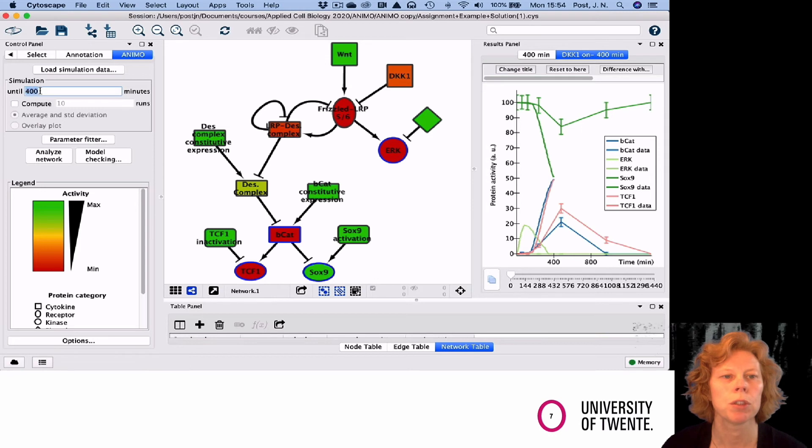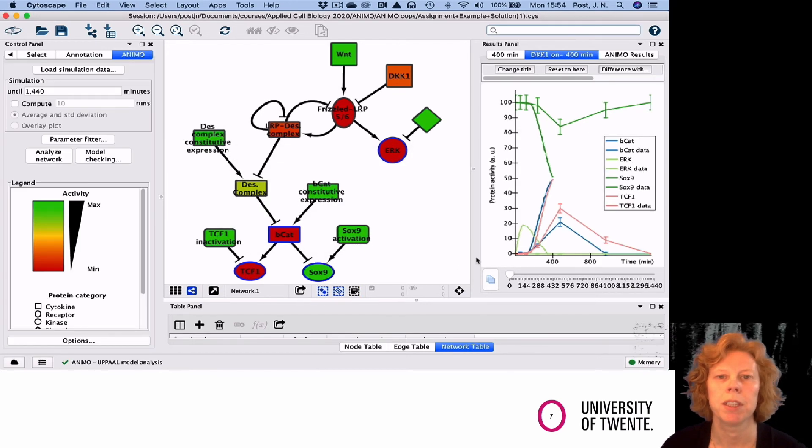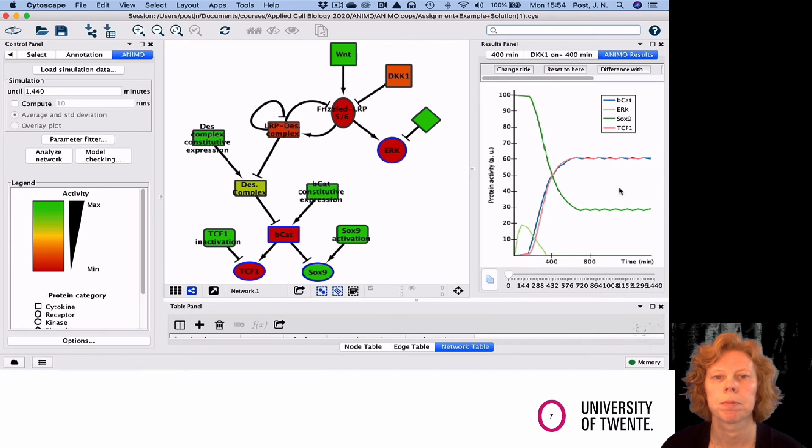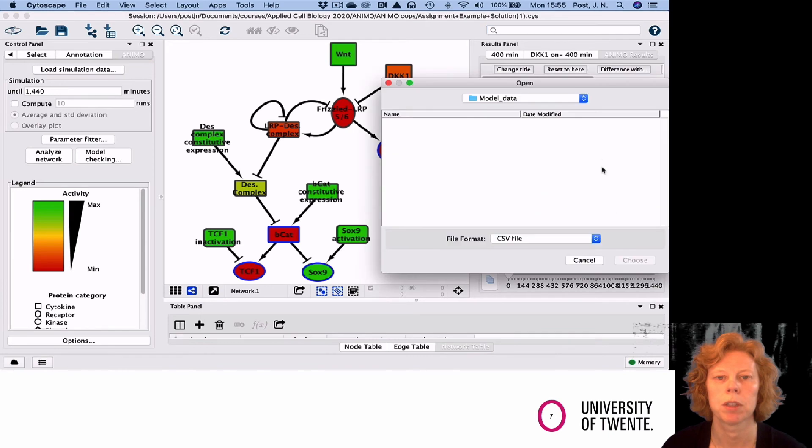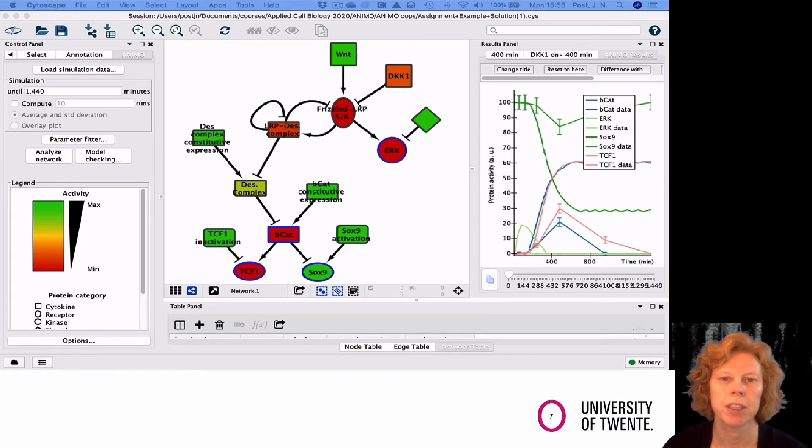I'm first going to do another simulation for 1440 minutes, the same as my wet lab data, and then import my data again in this new graph by right-clicking on one of the lines. Now I can see that the trend is kind of the same, but the values are very different. So I have an indication that the topology is similar, but it needs to be optimized.